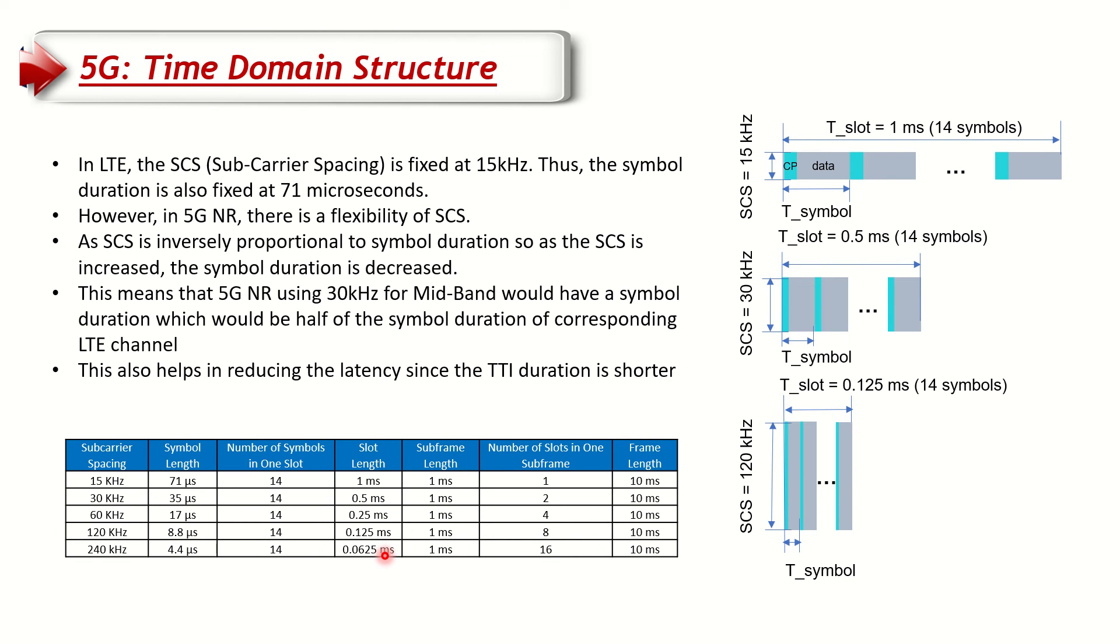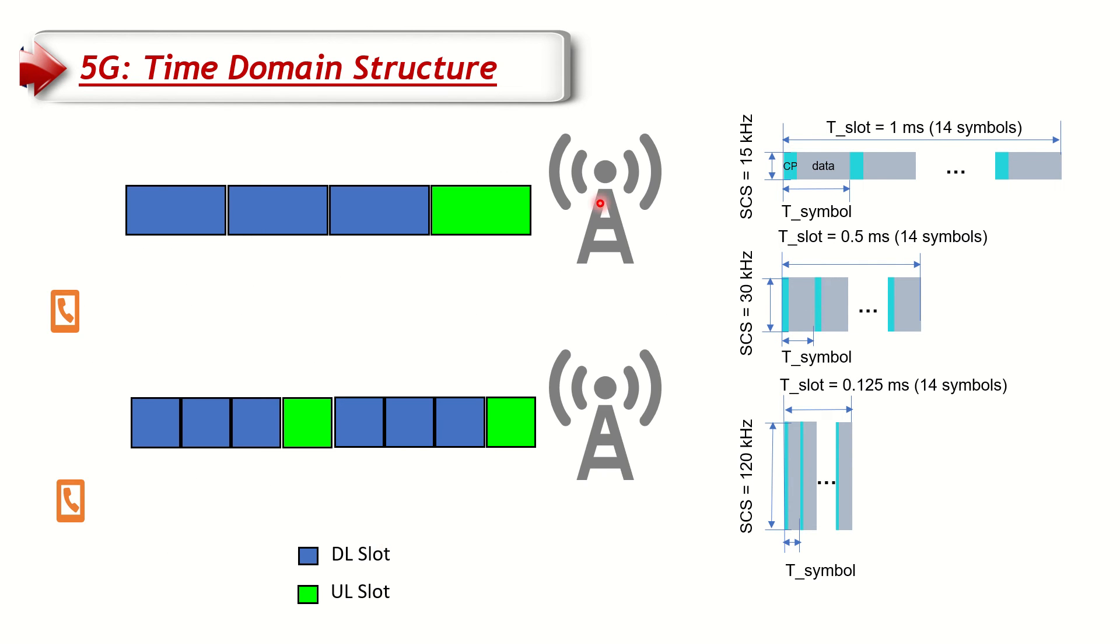Let's see how this gives us a lower latency. Let's say this is the 15 kilohertz structure that LTE has. If this is my ENODE B LTE node and this is the mobile device, if I'm sending data downwards the blue subframes are the downlink subframes or downlink slots and the green one is the uplink slot. The UE gets the data over here.